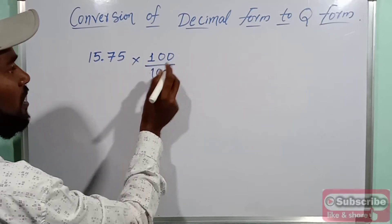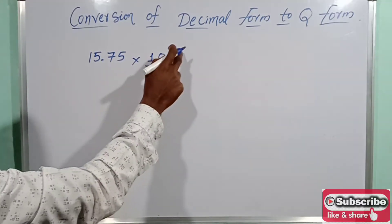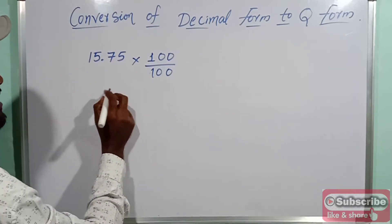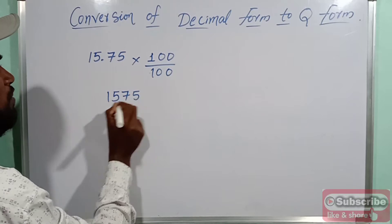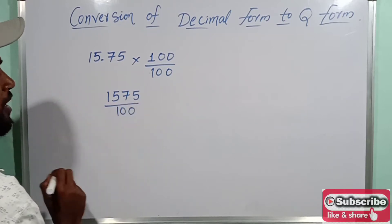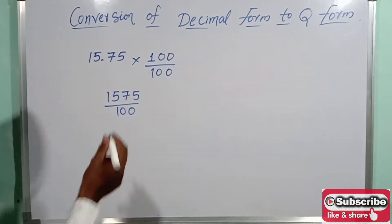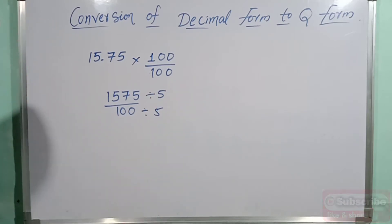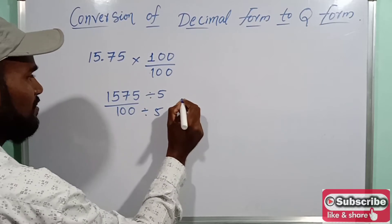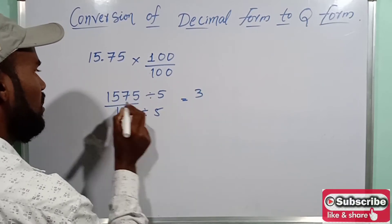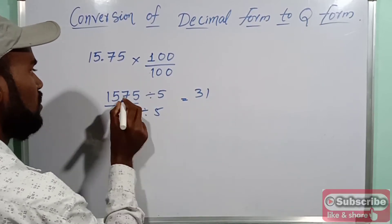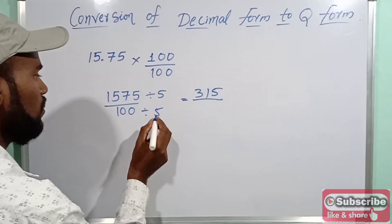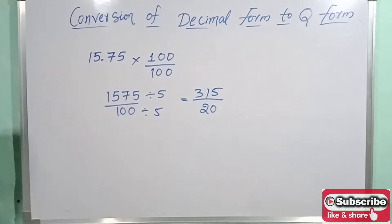We multiply numerator and denominator by 100. So 15.75 multiplied by 100 over 100 gives us 1575 by 100. Now we want to simplify it — divide by 5 and divide by 5. Five threes are fifteen, five ones are five, five fives are twenty-five. So we simplify to get the final rational form.